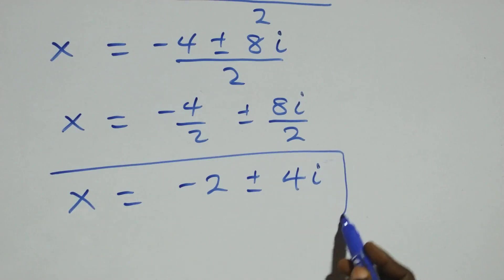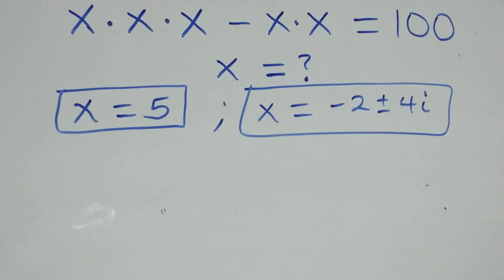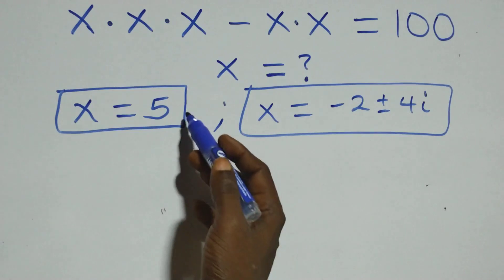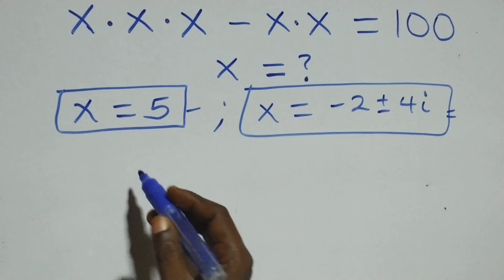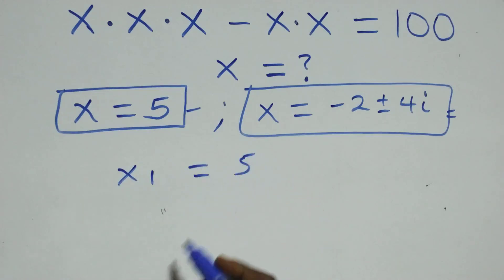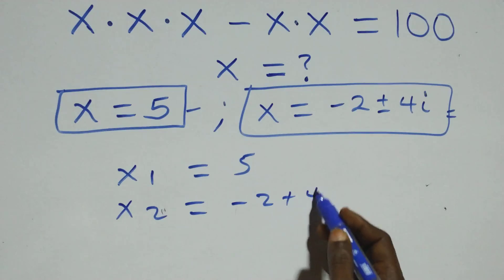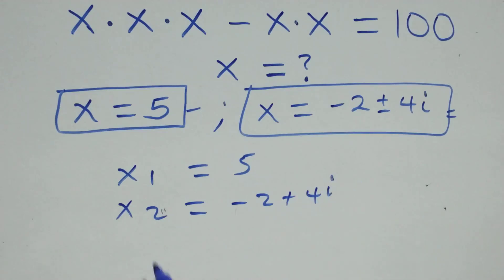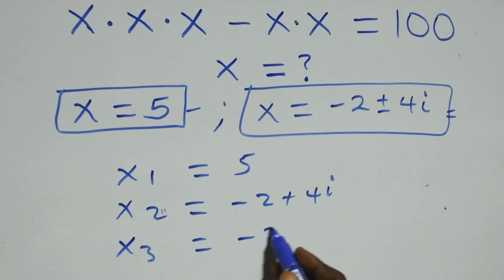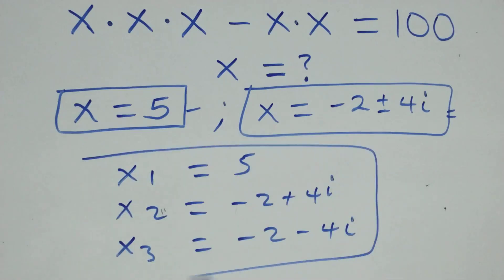This implies we have two complex solutions. Therefore, all together we have three solutions in this problem: one real solution and two complex solutions. The first solution x1 equals 5, the second solution x2 equals minus 2 plus 4i, and the third solution x3 equals minus 2 minus 4i.